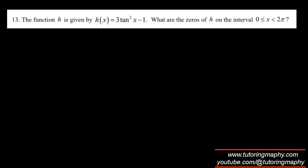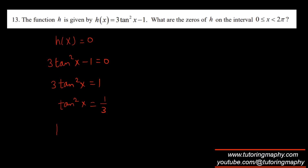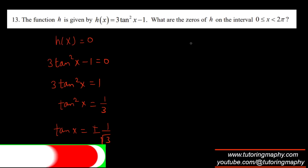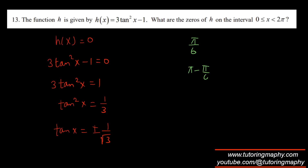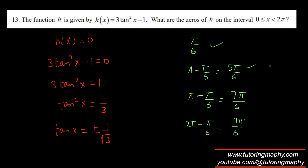Zeros of h: 3tan²(x) − 1 = 0, so tan²(x) = 1/3, giving tan(x) = ±1/√3. Solutions in all four quadrants. Reference angle is π/6. Quadrant 1: π/6; quadrant 2: 5π/6; quadrant 3: 7π/6; quadrant 4: 11π/6. Four answers total.